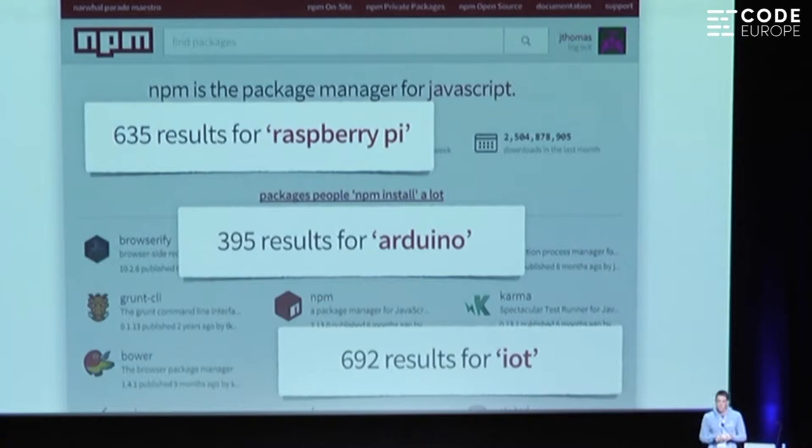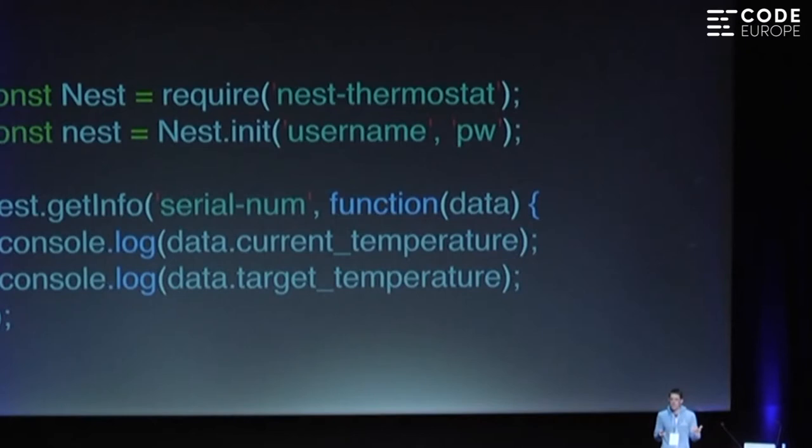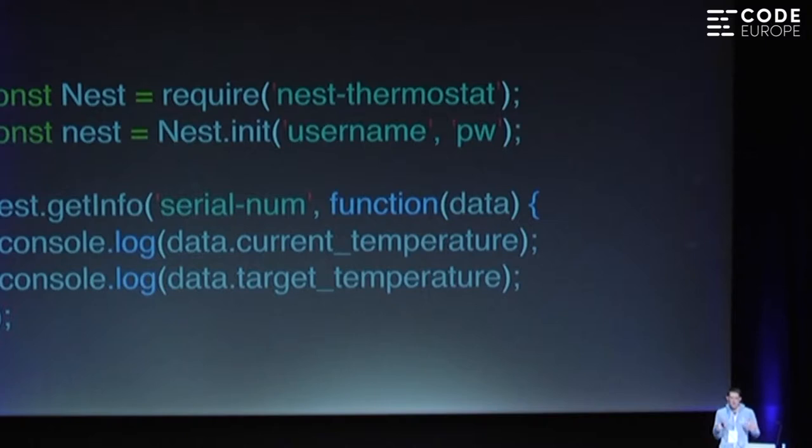People have already been experimenting in this space — taking the low-level device drivers and APIs, wrapping them in a nice JavaScript interface, and publishing them on NPM. So if you have one of those Nest thermostats at home, with a tiny bit of JavaScript you can NPM install the module, authenticate, and call a JavaScript function to get the current and target temperature. Now we can play around with these devices using JavaScript.